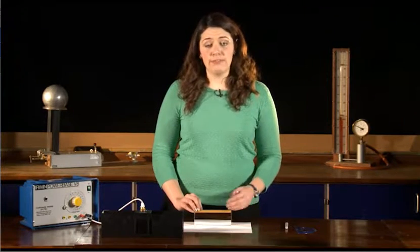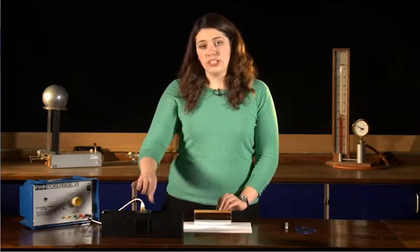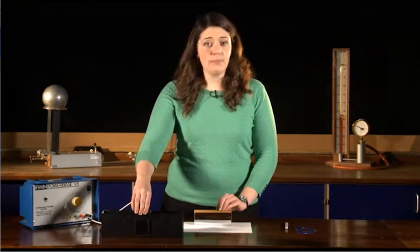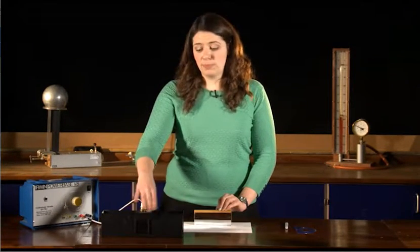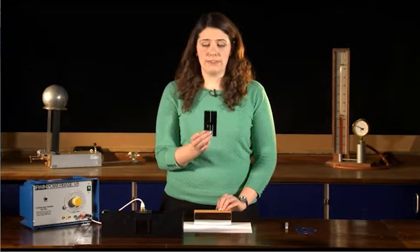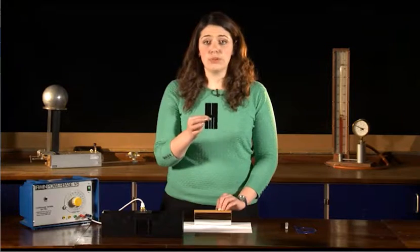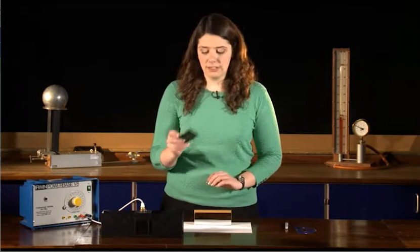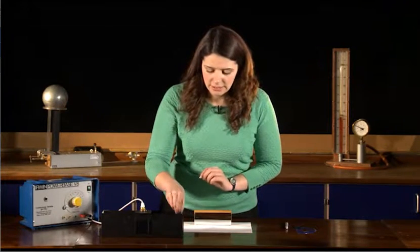We need a ray of light for our ray diagram to work, and we do that using a ray box, which is a light bulb surrounded by a black container. It has slots you can put in the front to make different types of rays—triple or single. Today we're using a single ray of light, so we place that in the front.